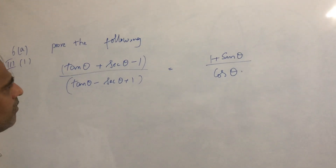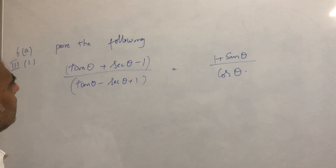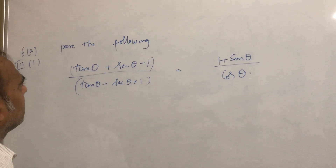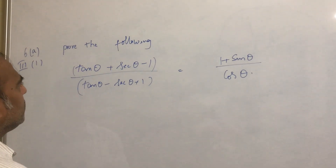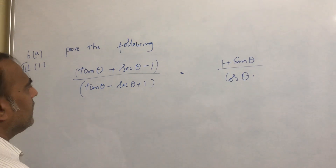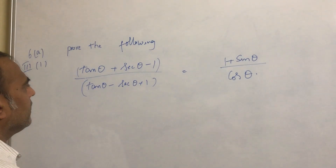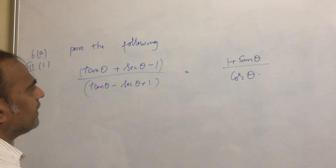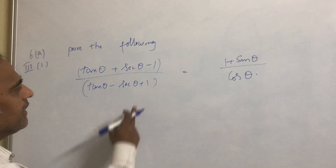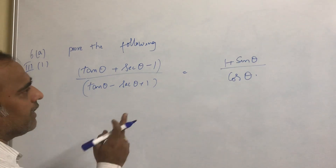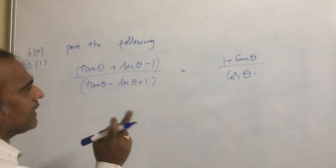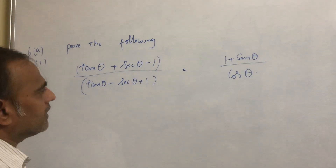Today we will see this problem. We need to prove that tan θ + sec θ − 1, divided by tan θ − sec θ + 1, is equal to (1 + sin θ) / cos θ.